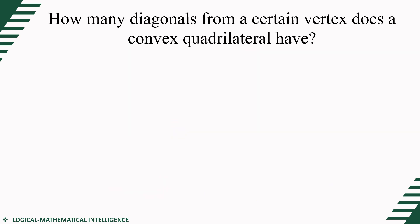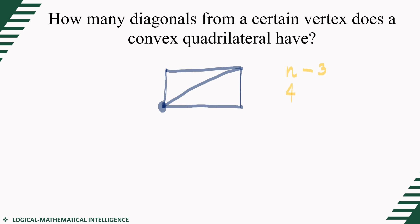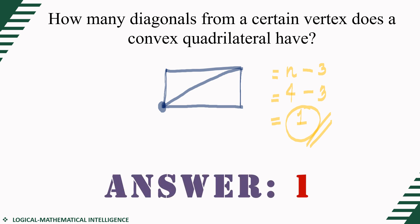Next: how many diagonals from a certain vertex does a convex quadrilateral have? Drawing the quadrilateral, we count the diagonals from one chosen vertex. From that single vertex, the answer is 1. Using the formula: n minus 3, for a quadrilateral that's 4 minus 3, which equals 1. So 1 diagonal from a certain vertex can be drawn in a convex quadrilateral.